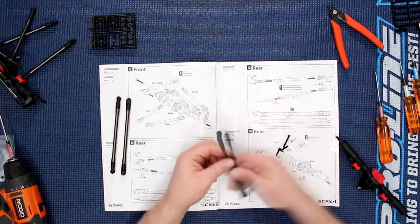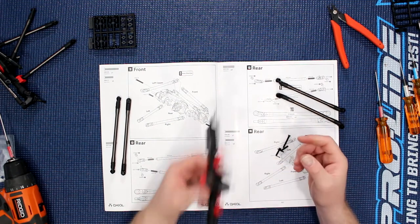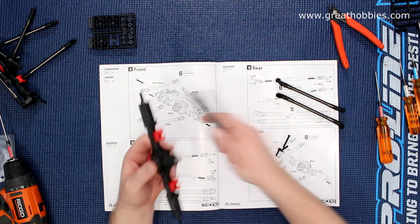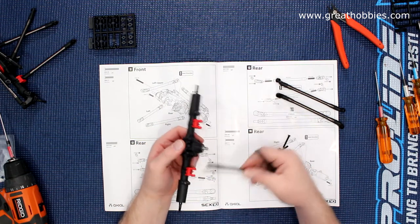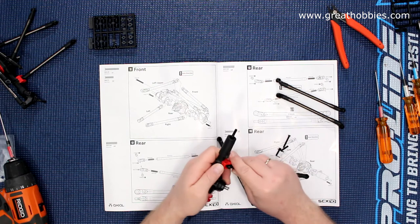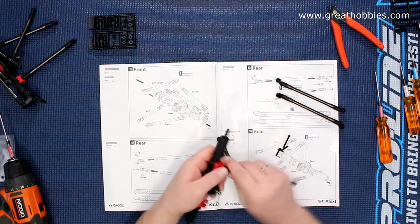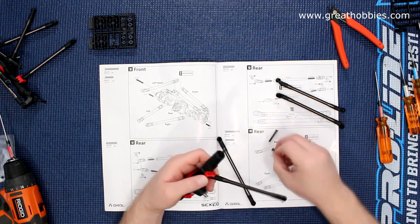Let's grab the rear diff pointing this direction here. The two straight ones, one goes here, one goes there. And again, sometimes these plastic are a little bit hard to put in your screws in, or your links should I say.